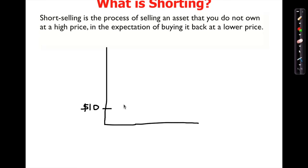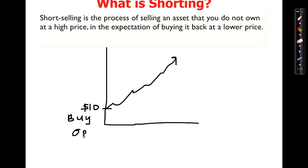I believe the price is going to go up, so I want to buy it at ten dollars. We call this 'buy to open' because you're buying to open a position. When you buy at ten dollars, that's a debit — it's minus ten dollars on your account.